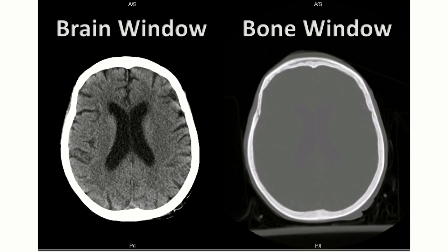In the bone window, the neutral density point is closer to that of bone, so you can clearly see the outer table, the inner table, and the interspersed diploë. The cranial cavity appears empty because the brain parenchyma is less dense than bone — it's underexposed, so to speak. Switching to the brain window, the neutral density point is closer to that of the brain parenchyma, so you can see gyri and deep sulci. However, like an overexposed image, the bone loses all its detail.